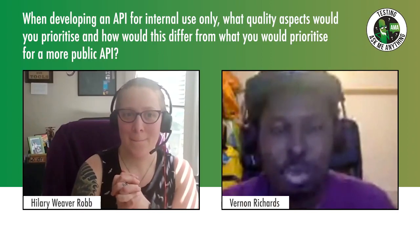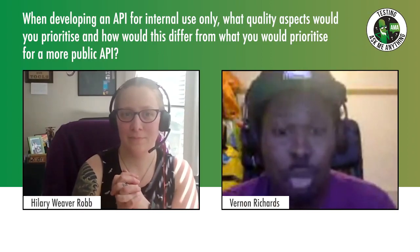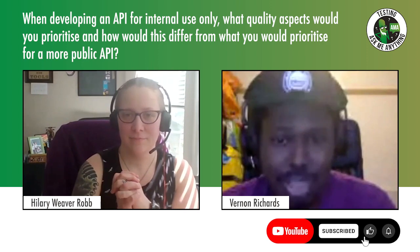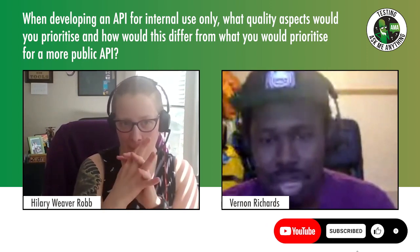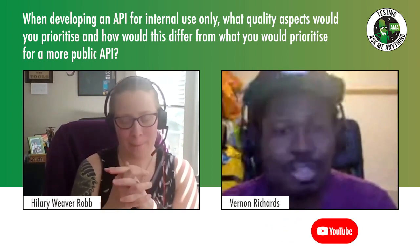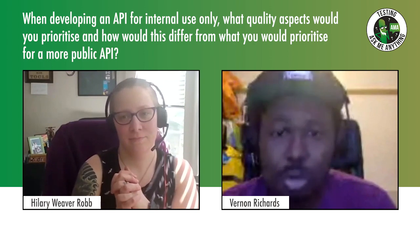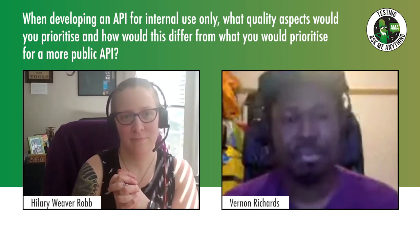Allison would like to know: when developing an API for internal use only, what quality aspects would you prioritize? And how would this differ to what you'd prioritize for a more public API?